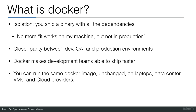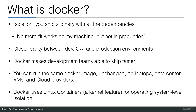The Docker image can include libraries from Ubuntu, Debian, CentOS, Red Hat — it doesn't really matter. Docker uses Linux containers, a kernel feature for operating system-level isolation. That means you actually need a Linux kernel to start a container. You still have Docker for Windows and Mac, but those first start a Linux VM and then run containers on it.